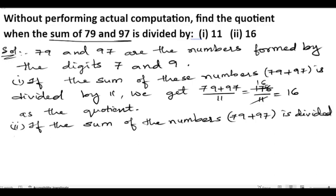By the sum of the digits, that is 7 and 9, 7 plus 9, which gives us 16. So we get 79 plus 97 upon 7 plus 9, that is we can write 16.